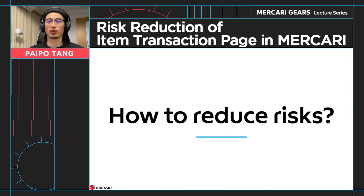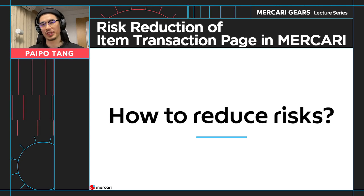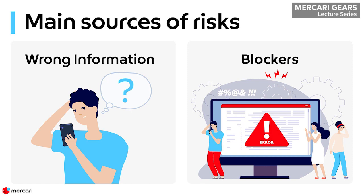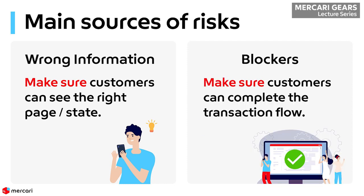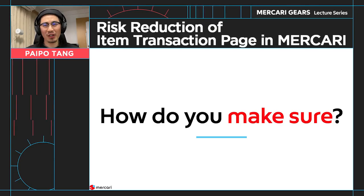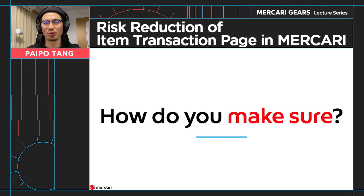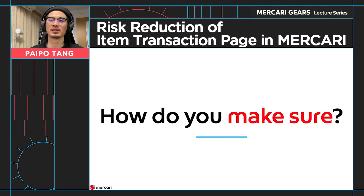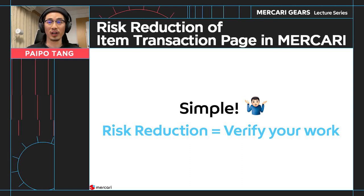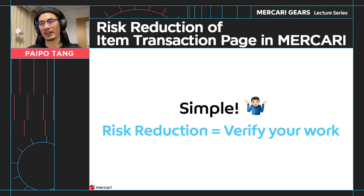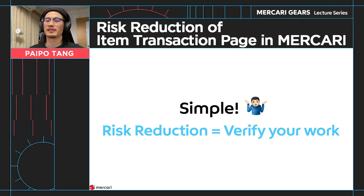So those are the risks involved in the item transaction page. How do we reduce the risk? To reduce the risk of wrong information, you need to make sure your customer can see the right page. To reduce the risk of blockers, you need to make sure your customers can complete the transaction flow. The real answer is straightforward: in order to do risk reduction, you have to verify your work. I would say this is the key takeaway for today — a concept so simple that people often forget about it.